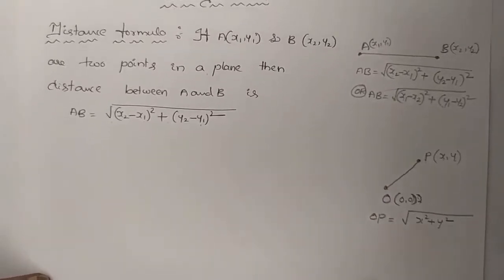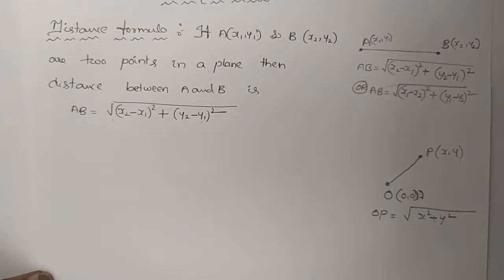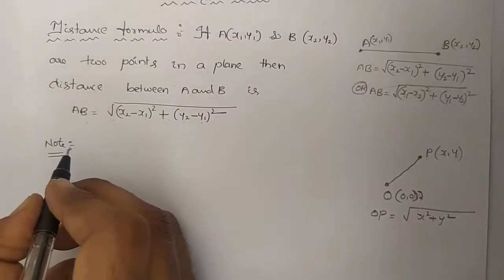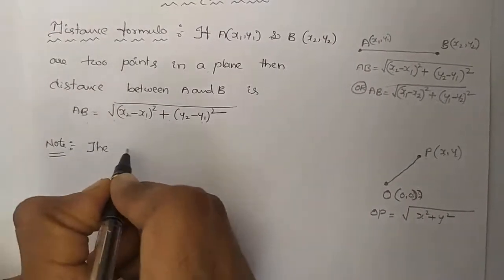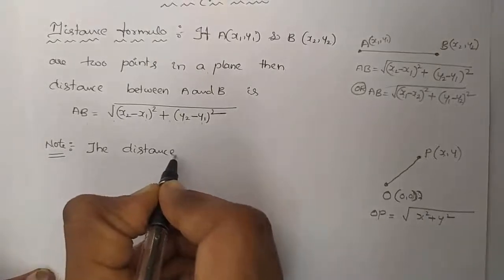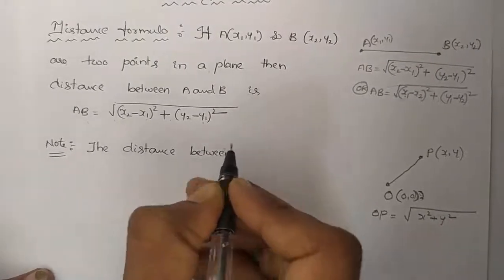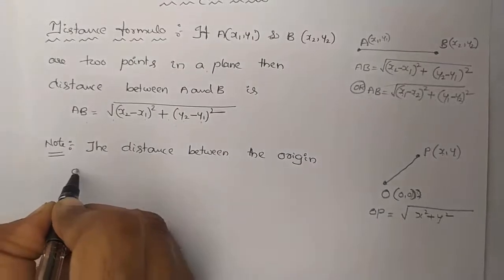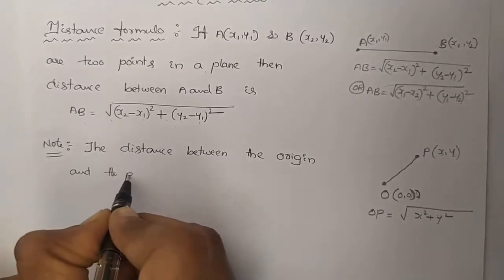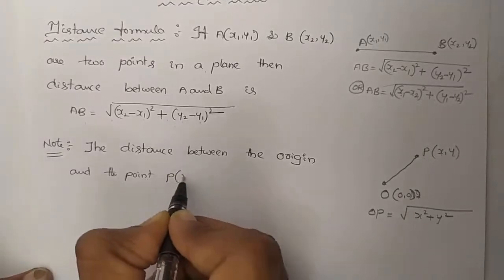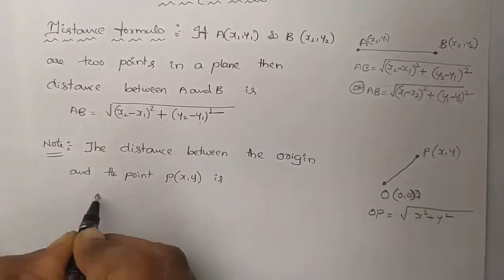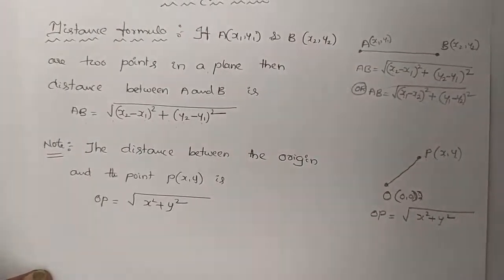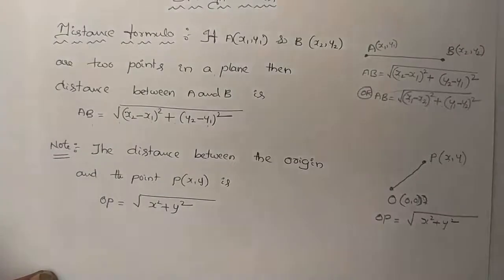It will be the distance between the origin and the point P. So take note that the distance between the origin and the point P, where P is (x, y), is OP equals to square root of x squared plus y squared. So it is the distance between the origin and the point P.